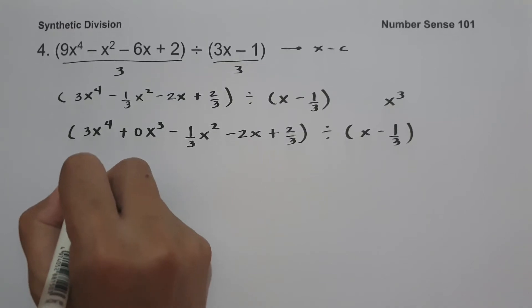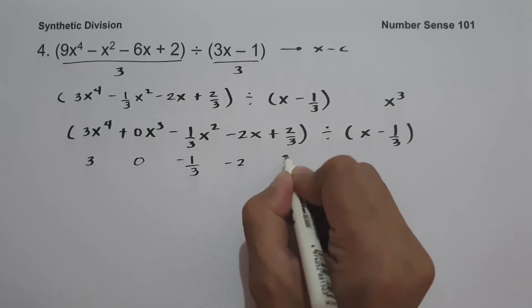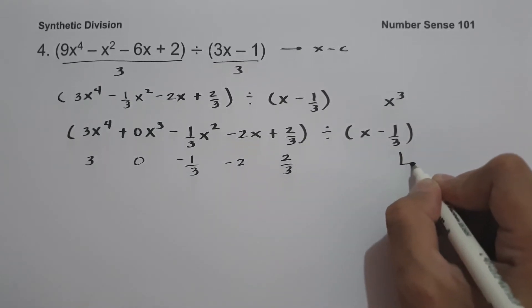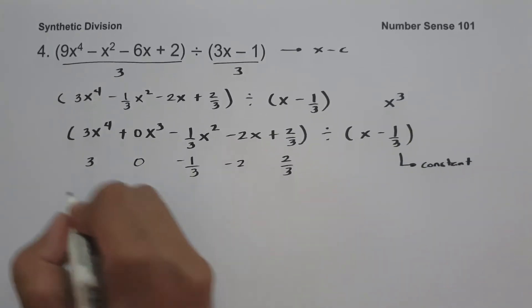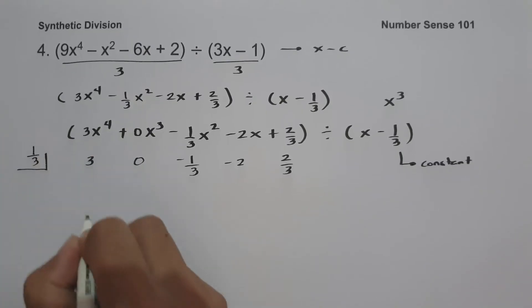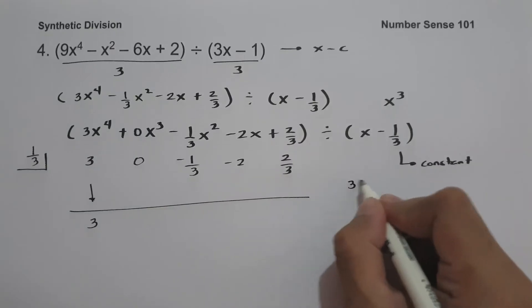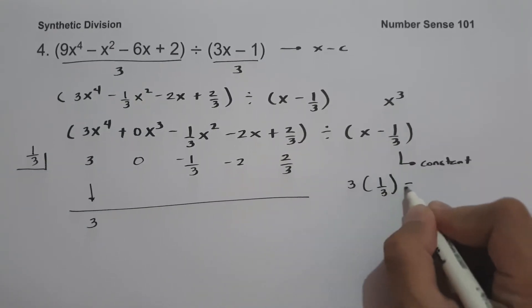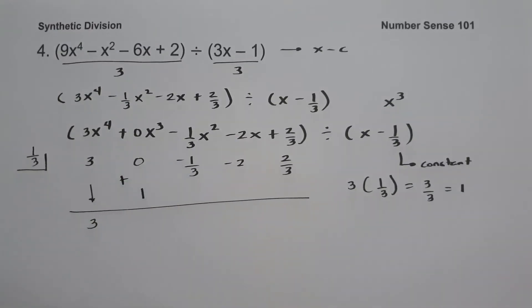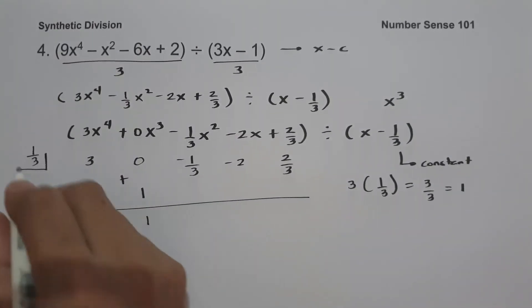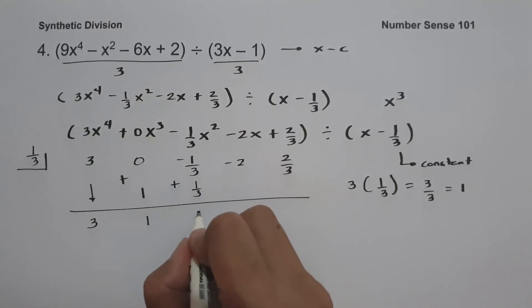The coefficients of the dividend are 3, 0, negative one-third, negative 2, and two-thirds. Since our constant is negative one-third, we take the opposite sign, positive one-third. We bring down 3. Three multiplied by one-third is 1. Zero plus 1 is 1. One multiplied by one-third is one-third. Negative one-third plus one-third is 0.